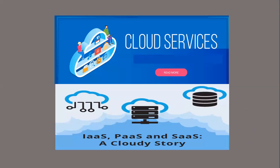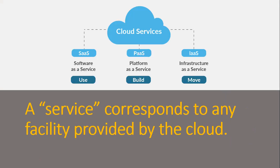There are three types of cloud services: IaaS, PaaS, and SaaS. The full forms are: SaaS is Software as a Service, PaaS is Platform as a Service, and IaaS is Infrastructure as a Service. A service corresponds to any facility provided by the cloud.